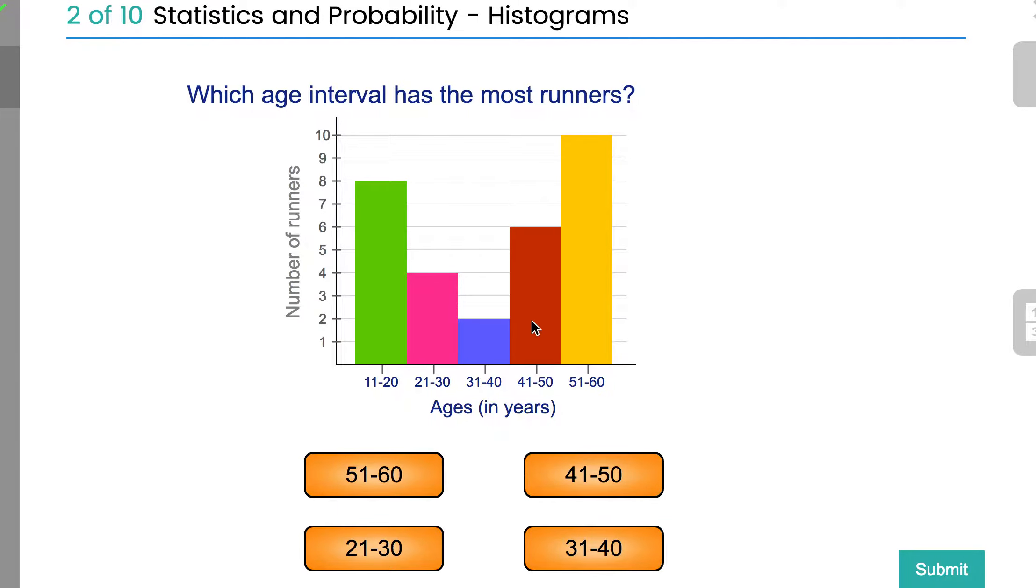The next one: which age range has the most runners? The most runners here is in 51 to 60, so that's a nice straightforward one.